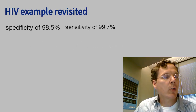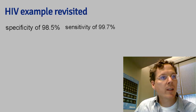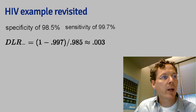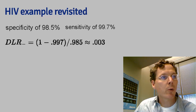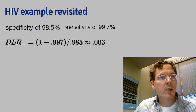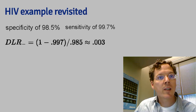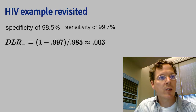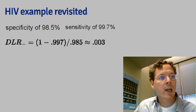Let's briefly cover the case when a subject has a negative test result using DLR minus. The DLR minus from the given sensitivity and specificity is 0.003. Therefore, your post-test odds of disease in the light of a negative test result is 0.3% that of the pretest odds. In other words, the hypothesis of disease is supported 0.003 times that of the hypothesis of the absence of disease given the negative test result.